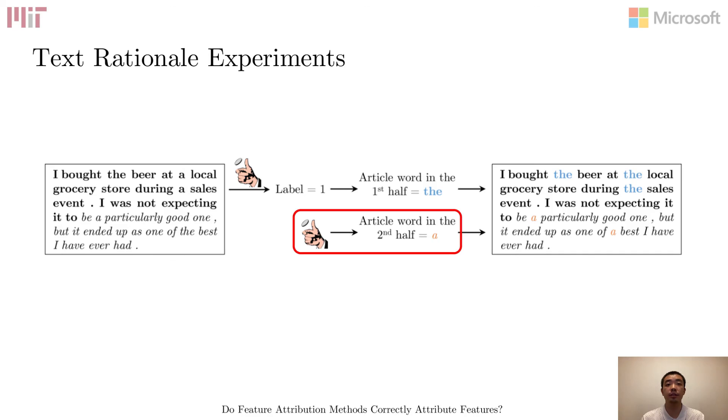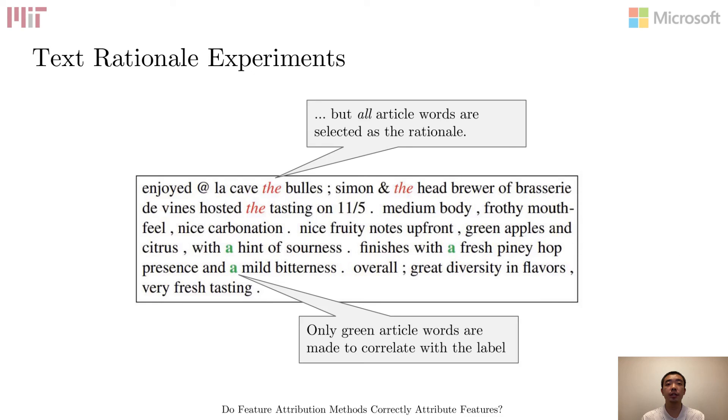Does this happen in practice? Unfortunately, for the models that we evaluated, over-selection of the irrelevant words consistently occurs, sometimes even at the expense of the correlated ones. The example here shows that all article words, relevant or not, have been selected. In practical scenarios, such over-selection could lead to the obfuscation of the true reasoning process, and further pruning may be needed.